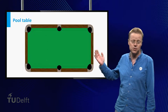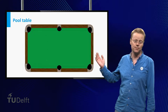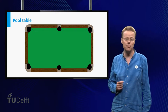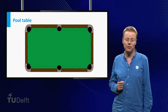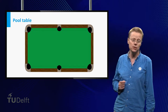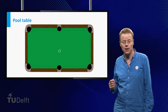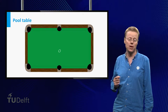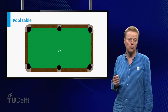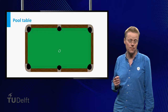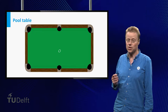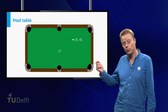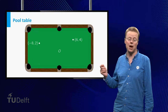Consider this pool table. If you want to indicate a location on the pool table, it can be done by fixing an origin and a horizontal and vertical position of the location relative to this origin O. For example, the point and the point.